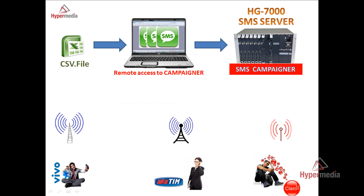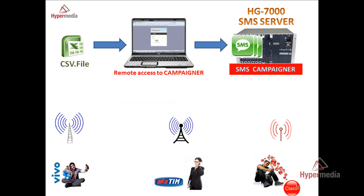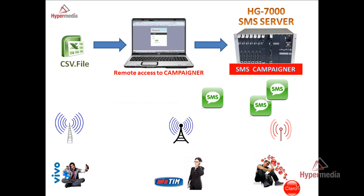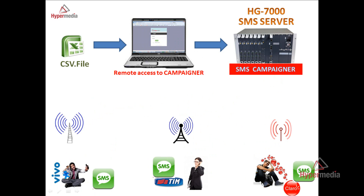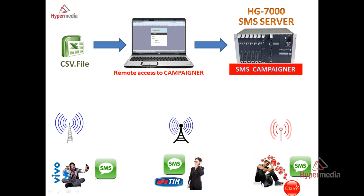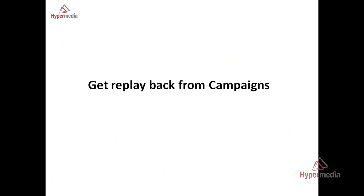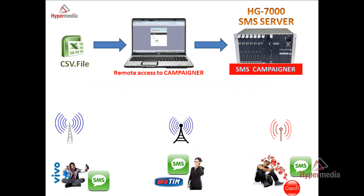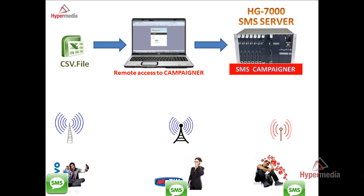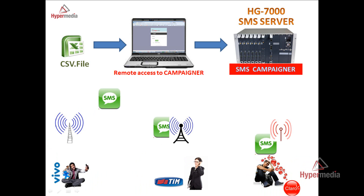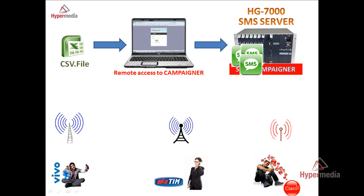After you access the Campaigner from your computer, you will send the message. The message will recognize the network and arrive to your users or customers. You can also get a reply back from your customers in order to collect the information that you need.